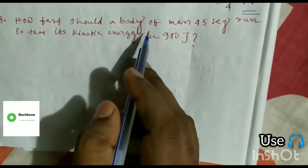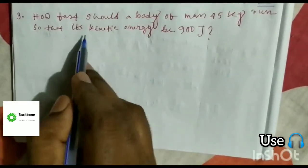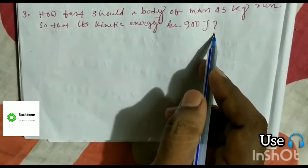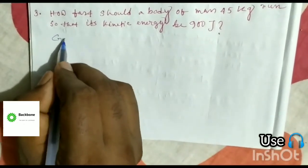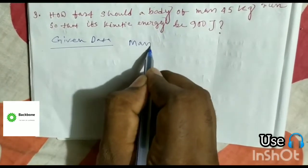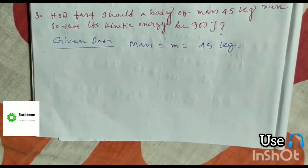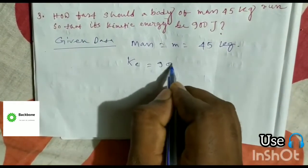Problem 3: How fast should a body of mass 45 kg run so that its kinetic energy be 900 J? Here given data, mass M is equal to 45 kg and kinetic energy is equal to 900 J.